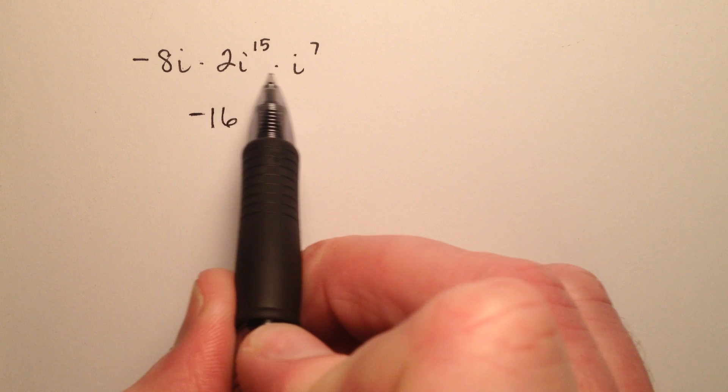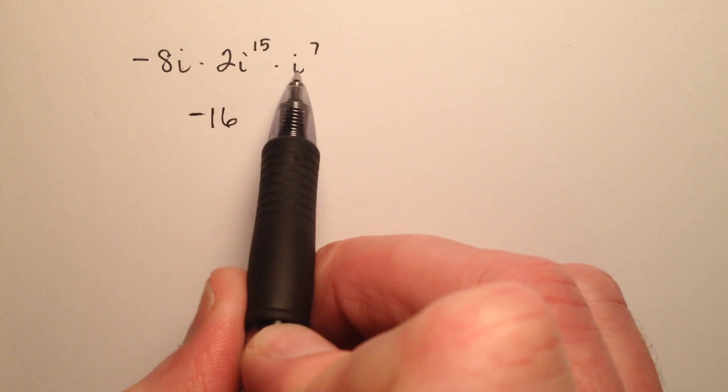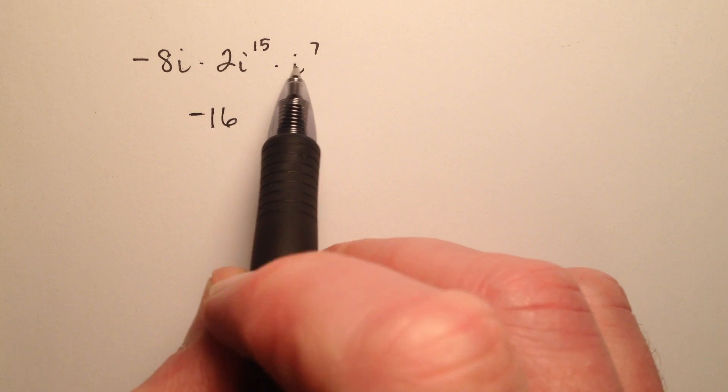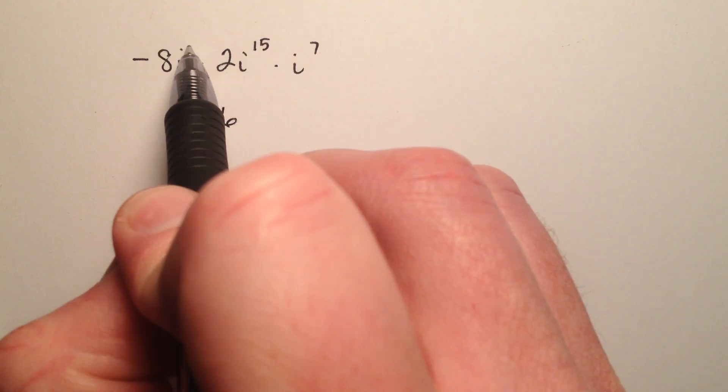And the i's, they're all like bases, so when we have like bases and we're multiplying, we can add the exponents.